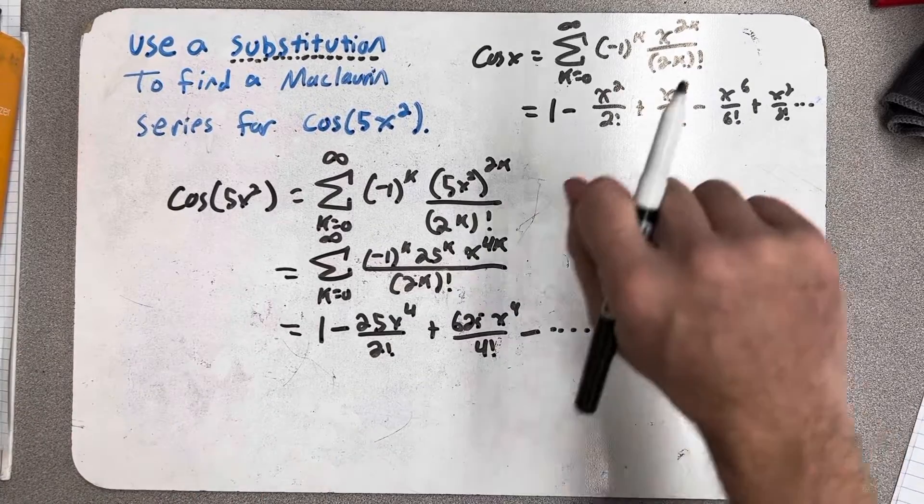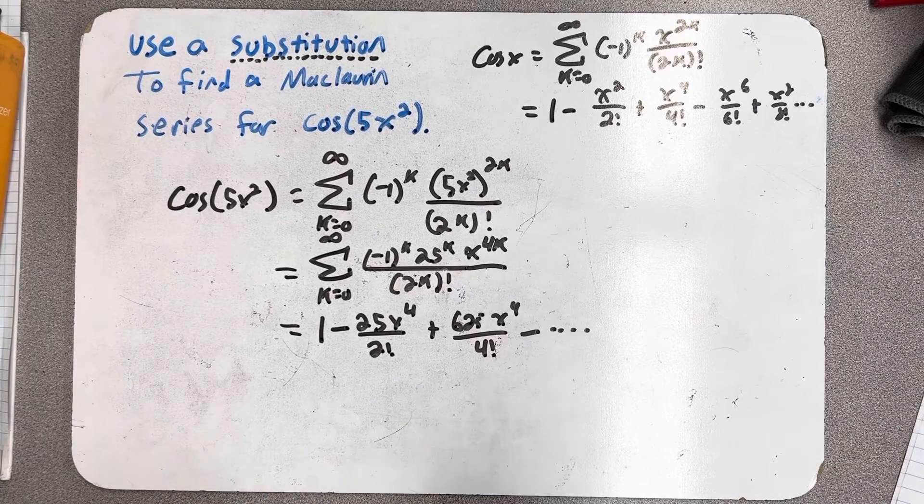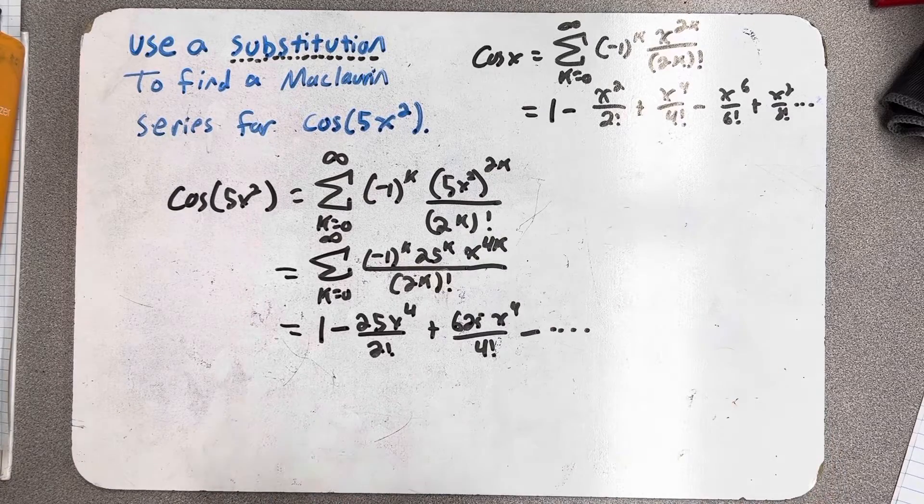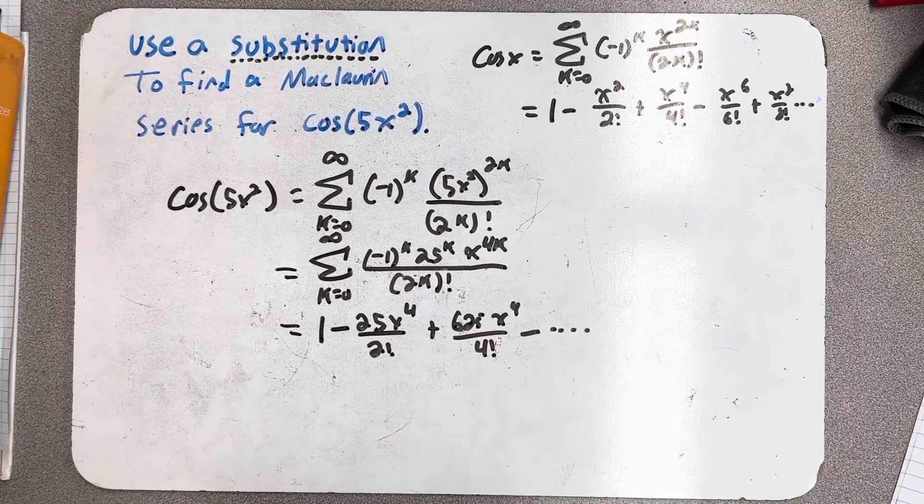And there we have it. We have found a Maclaurin series for cosine of 5x squared by using a substitution in a Maclaurin series that we already knew.